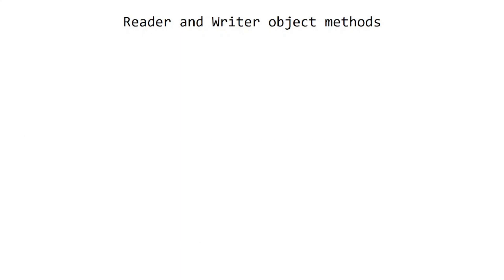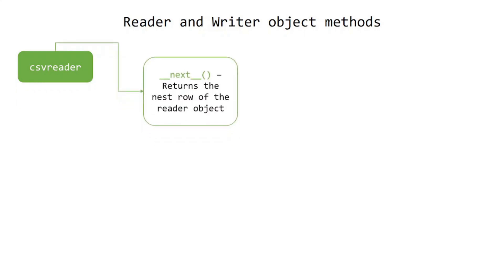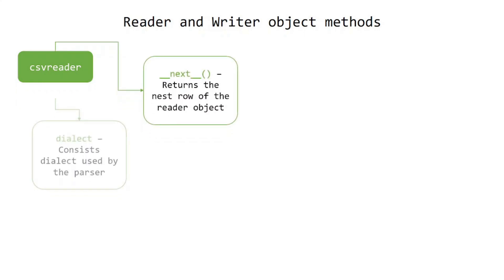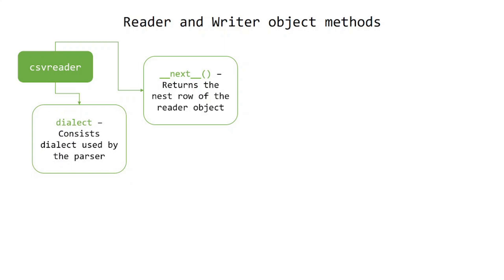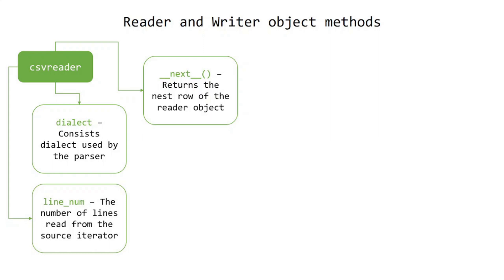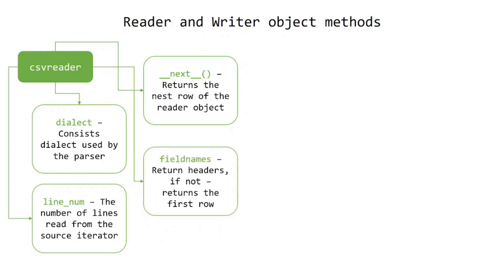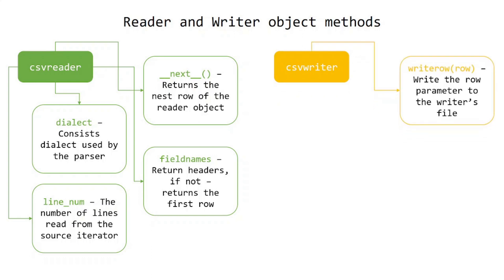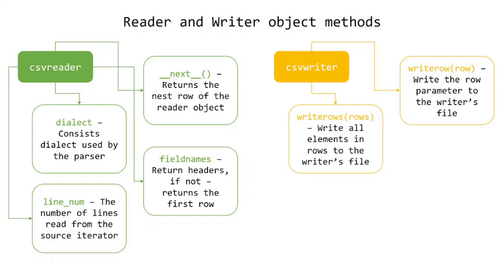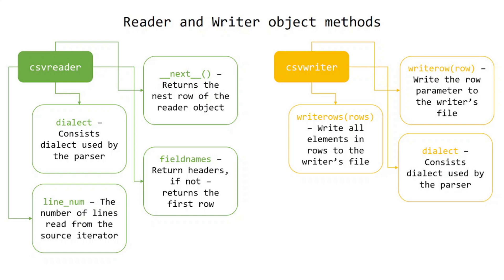Reader and writer object methods: CSV reader object has the next() method, which returns the next row of the reader object; dialect, which describes the dialect used by the parser; line_num, the number of lines read from the source iterator; and fieldnames, which returns headers or the first row if not set. CSV writer object has writerow(), which writes the row parameter to the writer's file; writerows(), which writes all elements in rows to the writer's file; and dialect, which describes the dialect used by the parser.